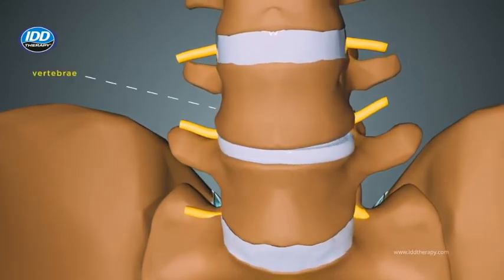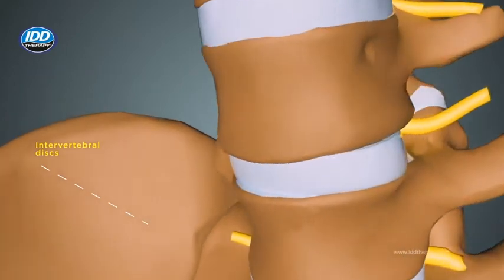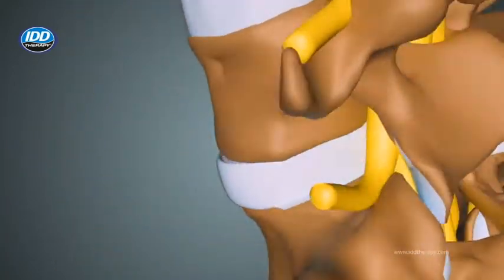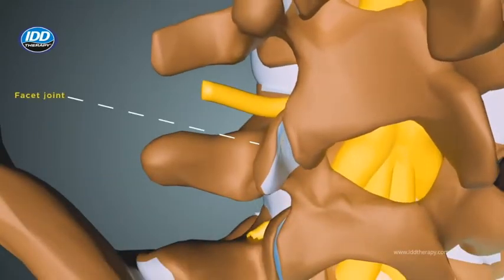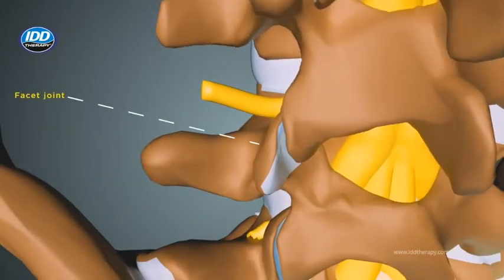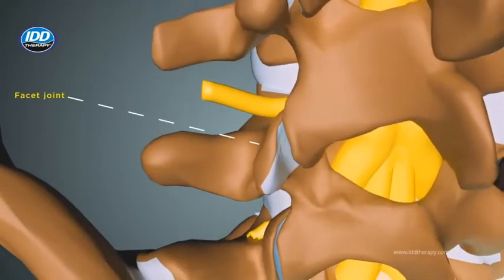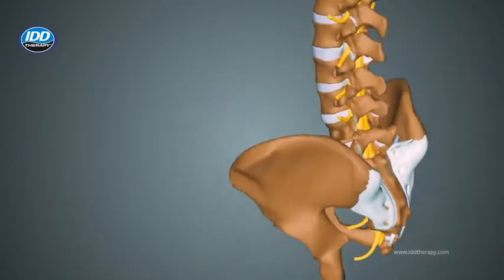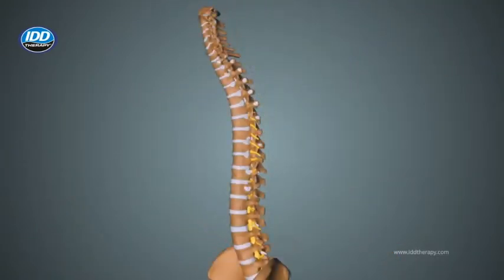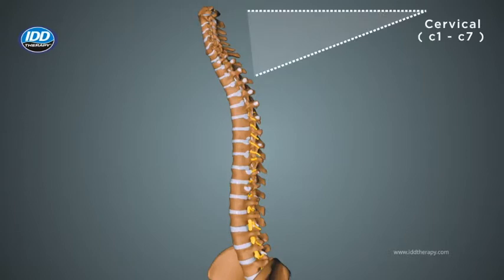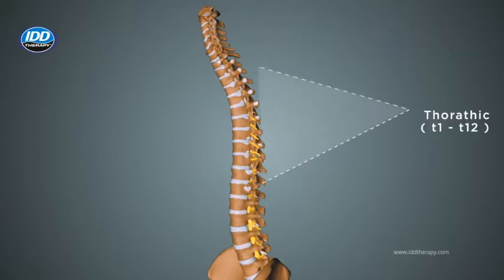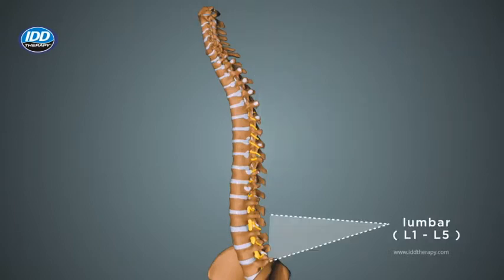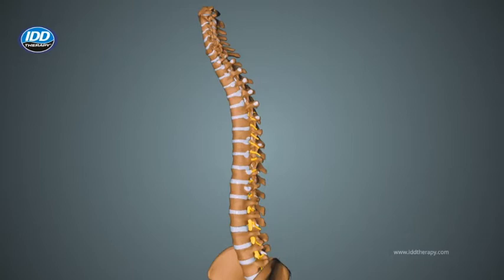Your spinal column is comprised of vertebral bones with a soft intervertebral disc for cushioning each vertebra. Paired facet joints in the back help support the spine while still allowing twisting and bending. There are 7 cervical vertebrae in your neck, 12 thoracic and 5 lower lumbar vertebrae.